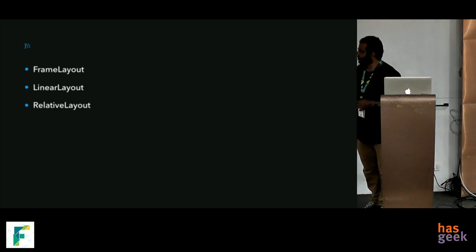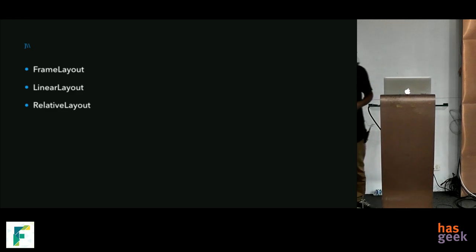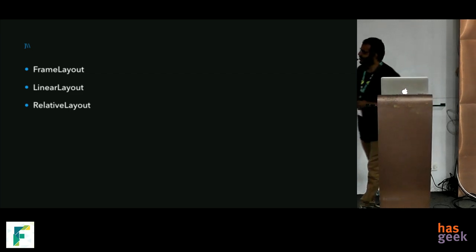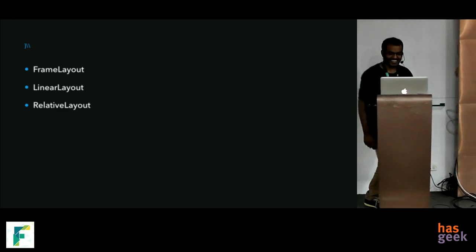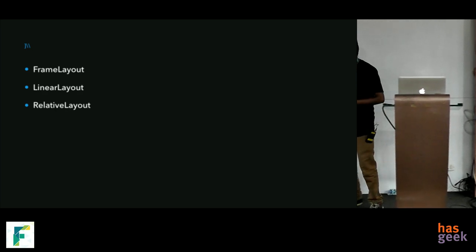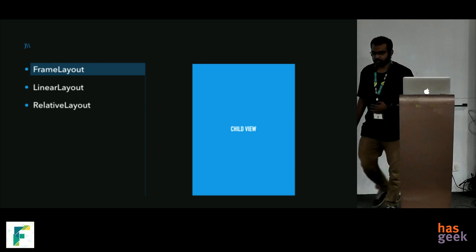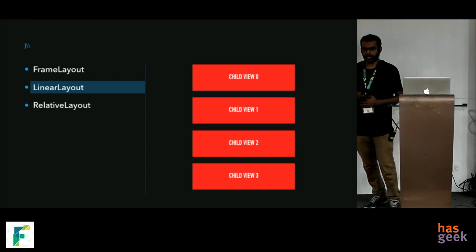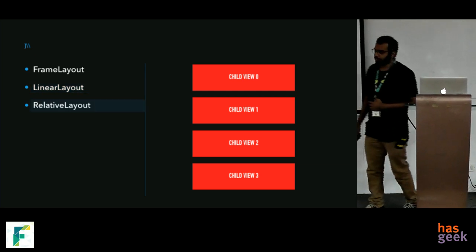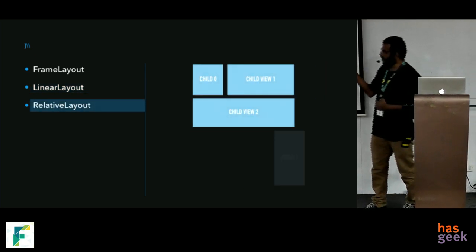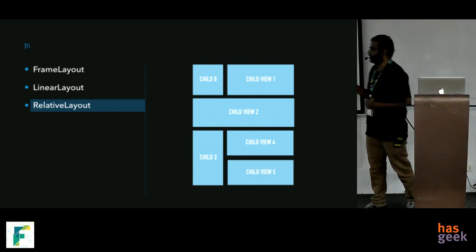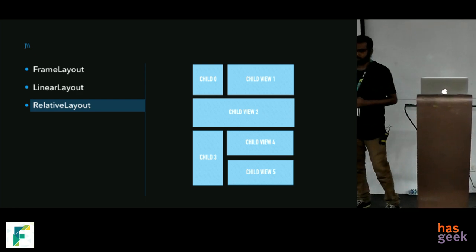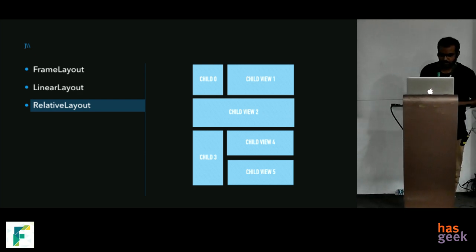Generally, we use these layouts for Android. We have frame layout, which can take only one child view. Then we have linear layout, which can stack views vertically or horizontally. Then we have relative layout, which stacks views based on the absolute positioning of each view. These layouts came in as part of initial Android development itself.